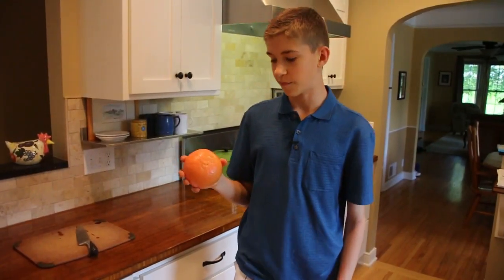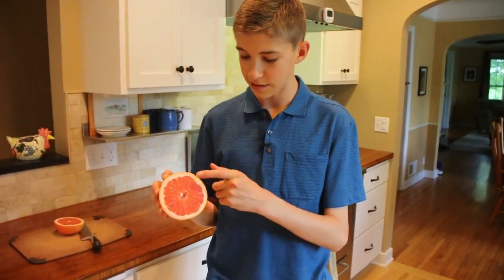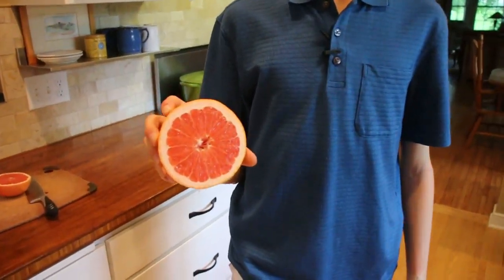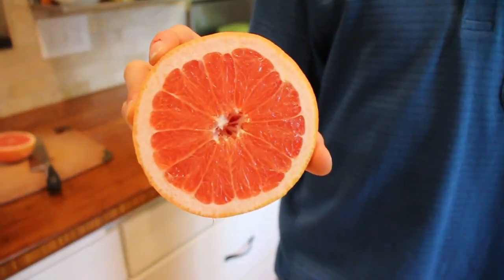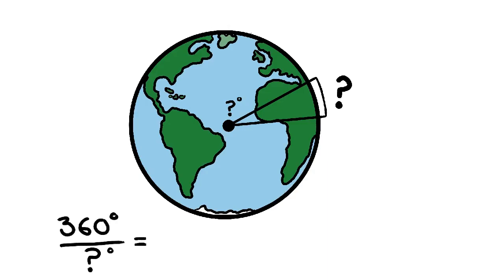Imagine the earth as a grapefruit. You can see that it's made up of many smaller sections. If you add up all these sections you get the total circumference. Eratosthenes would measure one such section. Then if he could find the inside angle of that arc he could figure out how many sections of that distance made up the earth's circumference.